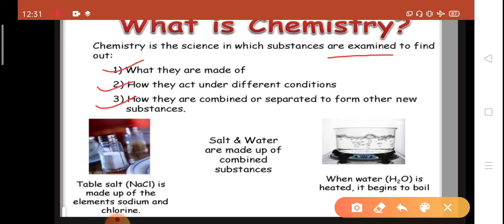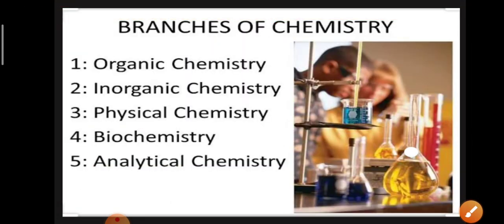Suppose for example, we are taking table salt. It is made up of the elements sodium and chlorine. Here is another example of water which is made up of hydrogen and oxygen, and when we heat water, it begins to boil. Salt and water are made up of combined substances.